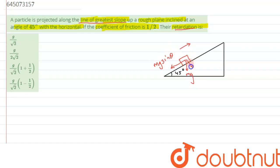...the component of mg—that is, we can write it as mg sin theta and here it is mg cos theta. All right, and since it has been moving up the plane, so the friction...